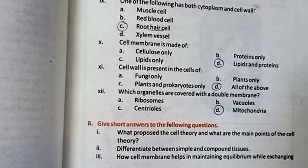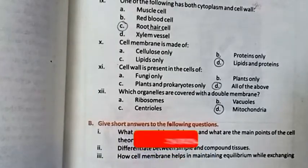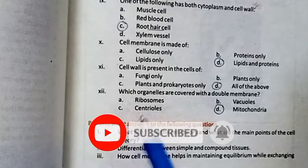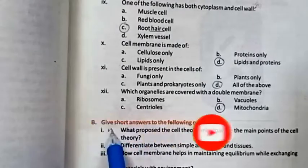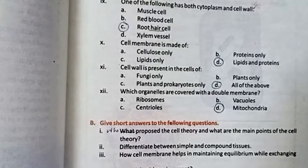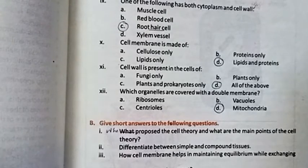Next, Unit 4 exercise. We will discuss question number 2B: Give short answers to the following questions. Part 1: Who proposed the cell theory and what are the main points of cell theory?